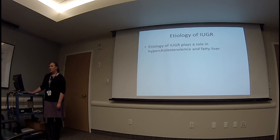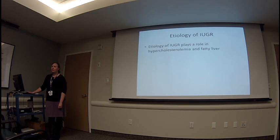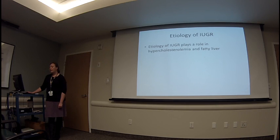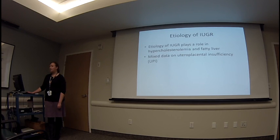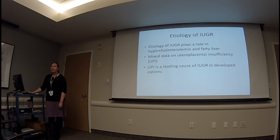We know that the etiology of IUGR plays a significant role in developing both hypercholesterolemia and fatty liver. In epidemiologic studies, people born at high elevations — exposed to hypoxia — as well as during famine have a much higher risk of developing hypercholesterolemia than other etiologies of IUGR. There's mixed data on whether uteroplacental insufficiency, or UPI, leads to hypercholesterolemia, and that's critical because UPI is the leading cause of IUGR in developed nations.